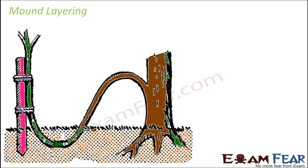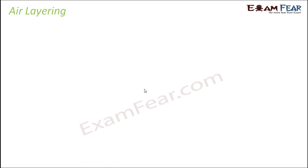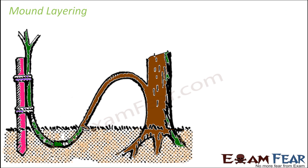In mound layering, you take a branch of the plant, forcefully bring it down, and put it below the soil, covering it well. Over a period of time it starts growing and finally gives rise to a new plant. The branch is not separated from the parent plant, as it would be in cutting — it stays attached, and still gradually grows to become a new plant altogether. This is called mound layering.